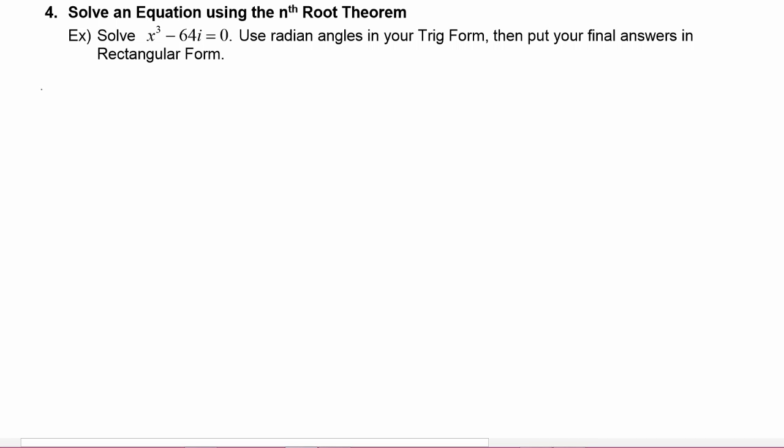So let's start by writing down our equation. We have x³ - 64i = 0, which means x³ = 64i, which means that x is equal to the cube root of 64i. So what these instructions are asking us to do by asking us to solve this equation is really asking us to find the three cube roots of z = 64i.